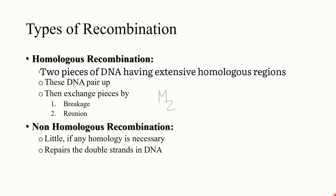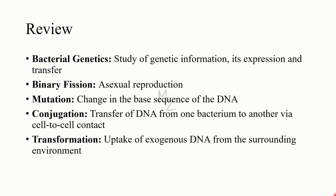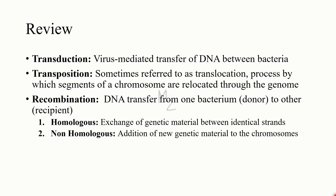Let's review everything quickly. Bacterial genetics is the study of genetic information, its expression and transfer. Binary fission is the asexual reproduction that divides one body into two organisms. Mutation is the change in the base sequence of DNA. Conjugation is the transfer of DNA from one bacterium to another via cell-to-cell contact. Transformation is the uptake of exogenous DNA from the surrounding environment. Transduction is virus-mediated transfer of DNA between bacteria. Transposition — sometimes called translocation — is the process by which segments of a chromosome are relocated through the genome. Recombination involves DNA transfer from a donor to a recipient, with two types: homologous recombination (exchange of genetic material between identical strands) and non-homologous recombination (addition of new genetic material to chromosomes).